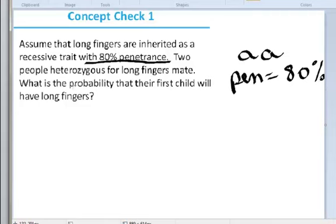Now we're seeing two people that are heterozygous. This means that we have big A, little a for one of the parents, and big A, little a for the other parent, okay, for these long fingers mate.